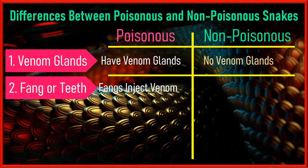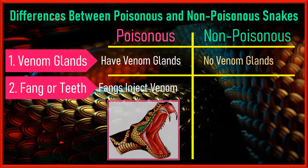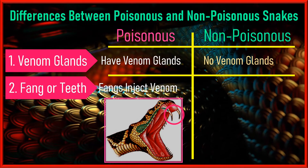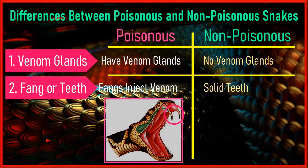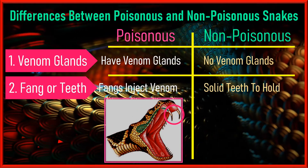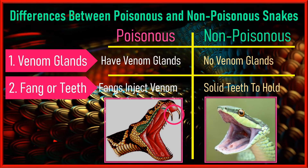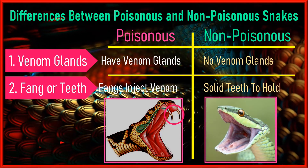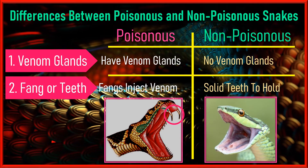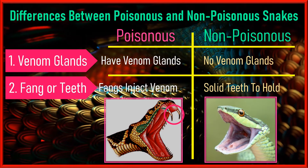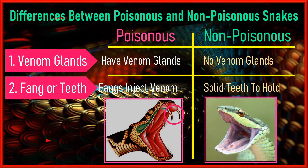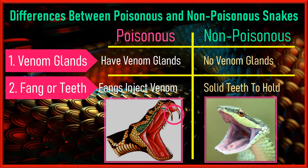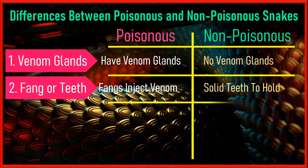Second, fangs or teeth: venomous snakes have two needle-like fangs in the upper front side of the jaw, which are usually visible when the snake opens its mouth to bite. These fangs inject venom into the prey. Non-venomous snakes do not have fangs but have simple teeth to grab or hold the prey to engulf.